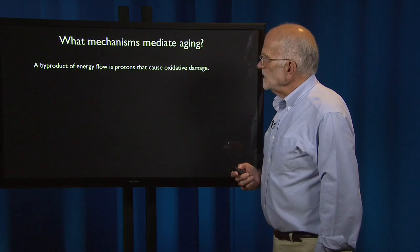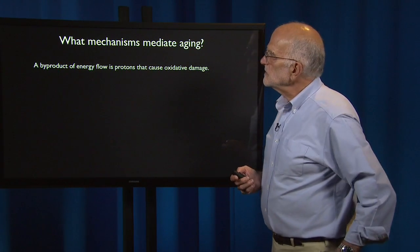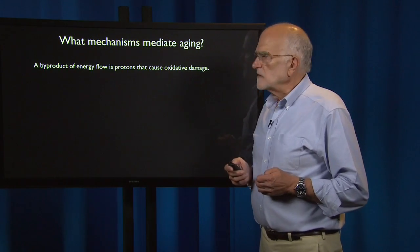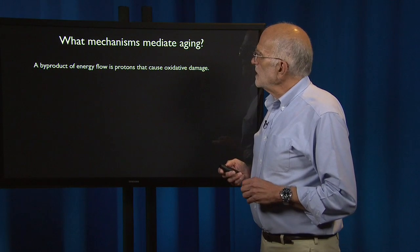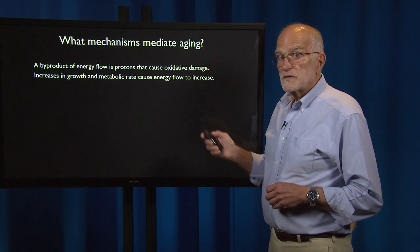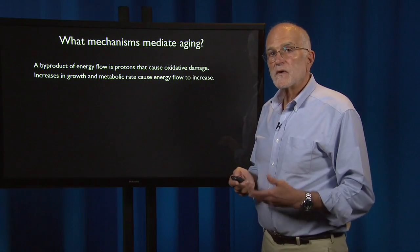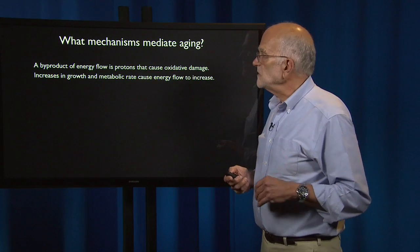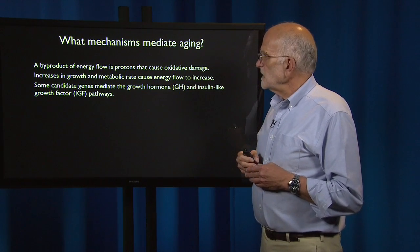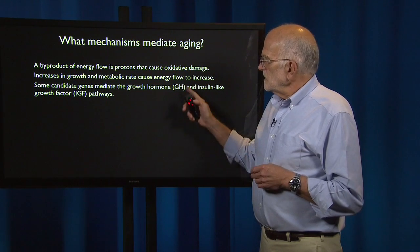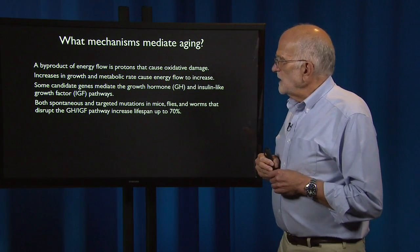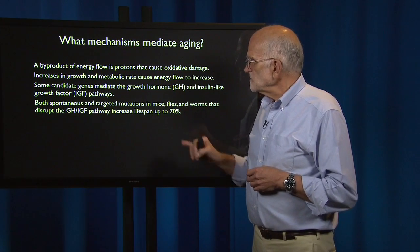What are the mechanisms that mediate aging? One of them is associated with energy flow: a byproduct of energy flow is protons that leak out of mitochondria, bind with water in the cytoplasm, and cause oxidative damage. Increases in growth and metabolic rate cause energy flow to increase, so things that grow more rapidly and eat more also produce more proton leakage and more cellular damage. Candidate genes that mediate this response include growth hormone and insulin-like growth factor, and mutations in these pathways have been investigated in mice, flies, and worms — some of those mutations increase lifespan in these model organisms by up to 70%.